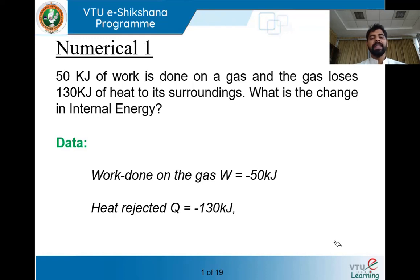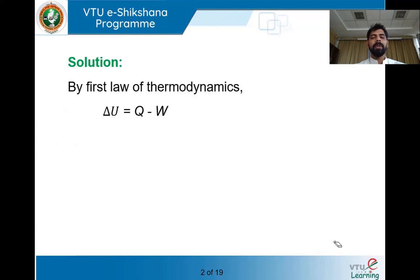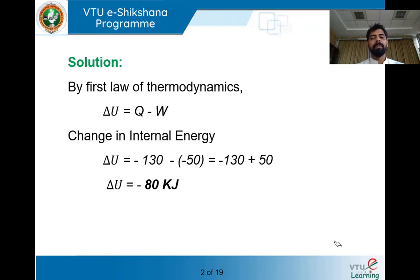What is asked is the change in internal energy. From the first law of thermodynamics, delta U equals Q minus W. The entire work cannot be derived from the heat added; a part is used for raising the internal energy. So delta U equals minus 130 minus (minus 50), which gives minus 130 plus 50, so delta U equals minus 80 kilojoules.